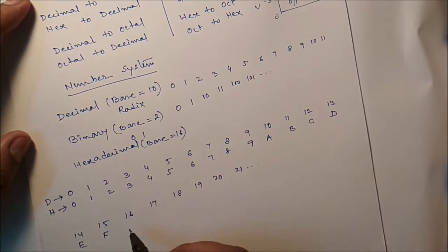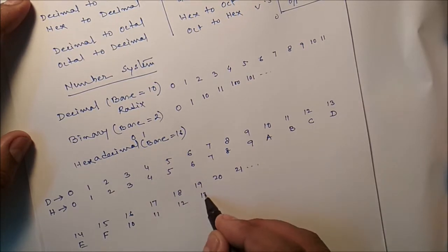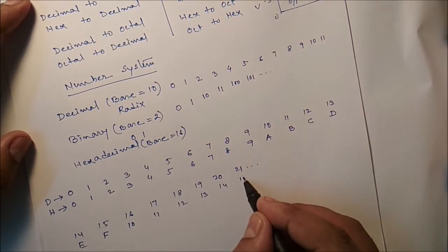So after F, it will be 1, 0. Then 11, 12, 13, 14, 15.